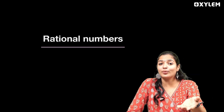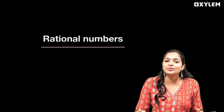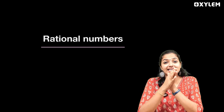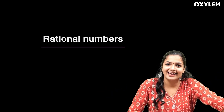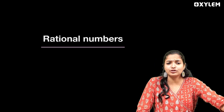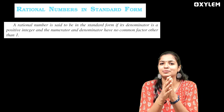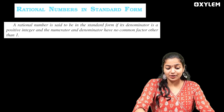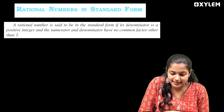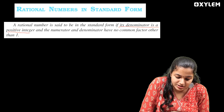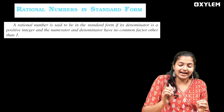Now, we're going to learn the standard form of rational numbers. What's the standard form? We're going to learn the standard form from a textbook. A rational number is in standard form if its denominator is a positive integer and the numerator and denominator have no common factor other than one.